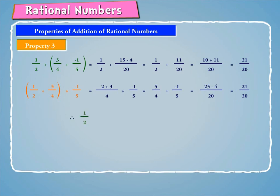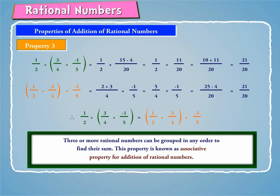Therefore, 1/2 + (3/4 + (-1/5)) is equal to (1/2 + 3/4) + (-1/5). Hence, three or more rational numbers can be grouped in any order to find their sum. This property is known as the associative property for addition of rational numbers.